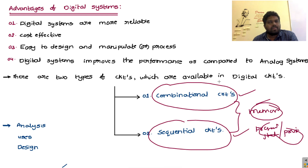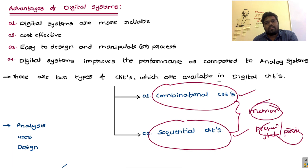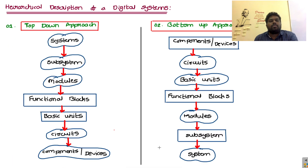When designing a digital electronic circuit, there are three important factors to focus on: analysis of the problem, its uses, and the design part. These are the important factors to design any digital electronic circuit for a complex problem. The next topic is the hierarchical description of a digital system.